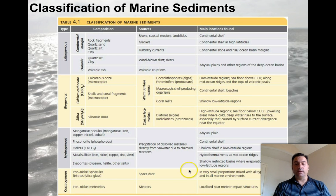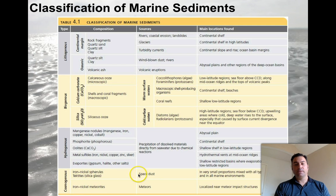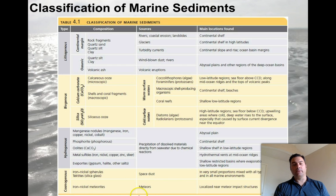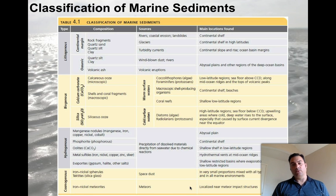I like the cosmogenous entry down here — everybody's interested in space dust. Iron-nickel spherules, tektites, and silica glass — it's usually considered space dust present in very small proportions, mixed with all types of sediment in all marine environments. Occasionally you'll find a little tektite, a little piece of space dust stuck inside your sediment. But eventually you get a big meteor that slams in and you might get meteorite fragments distributed throughout a local area. Sometimes we see these impacts on the bottom of the ocean as well.